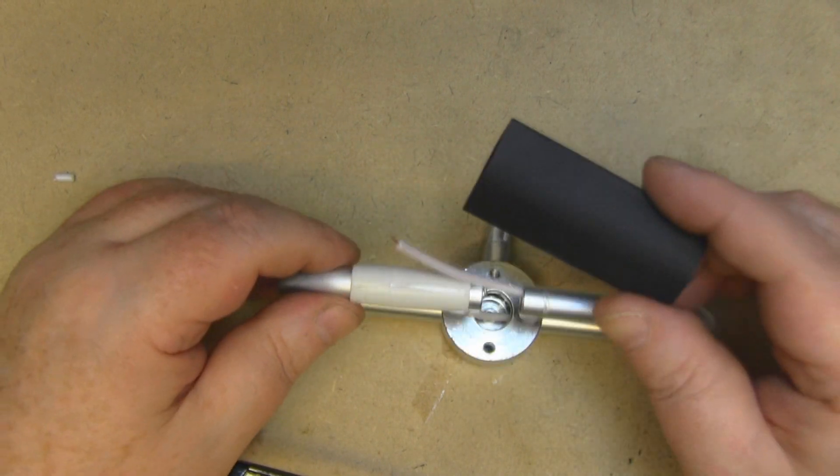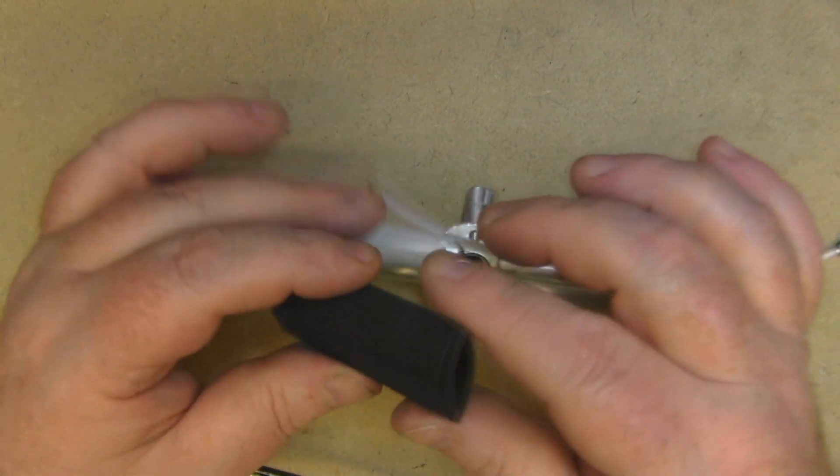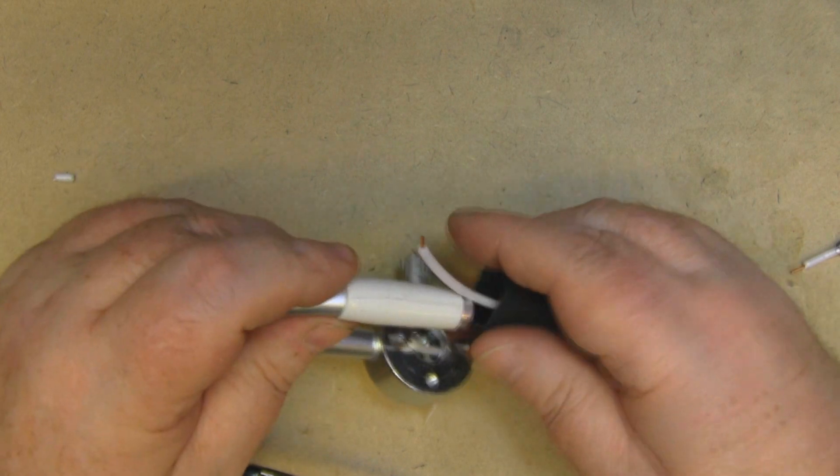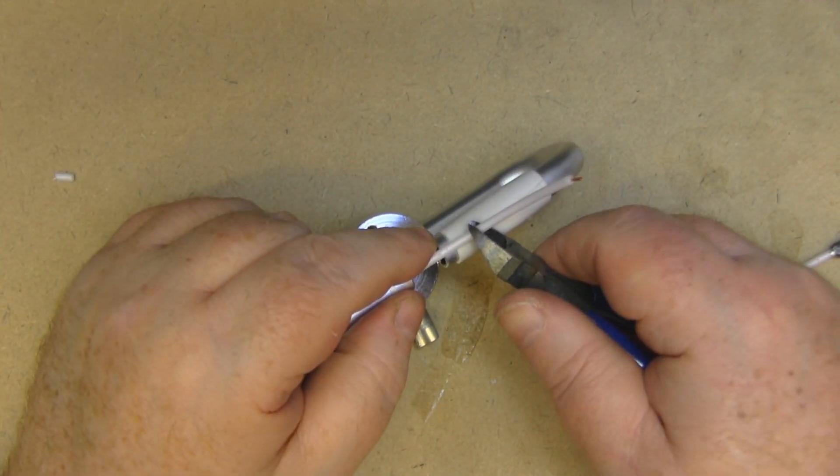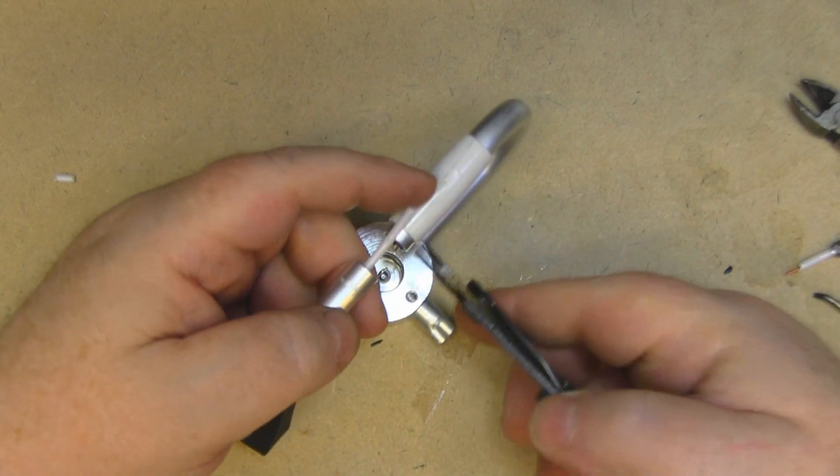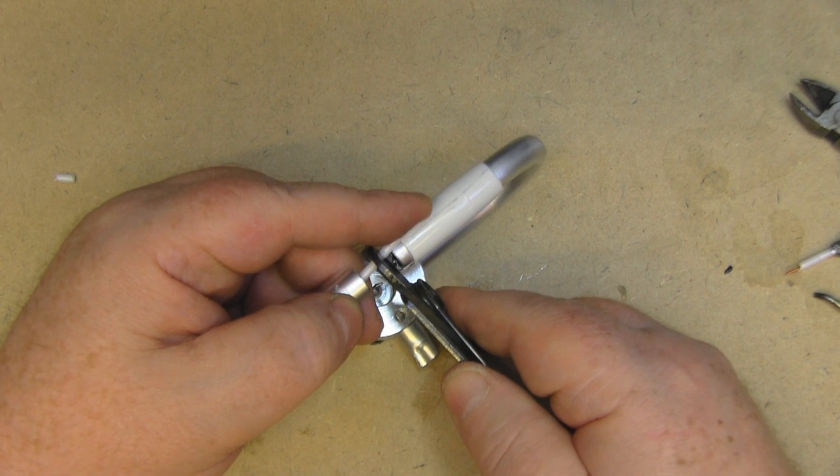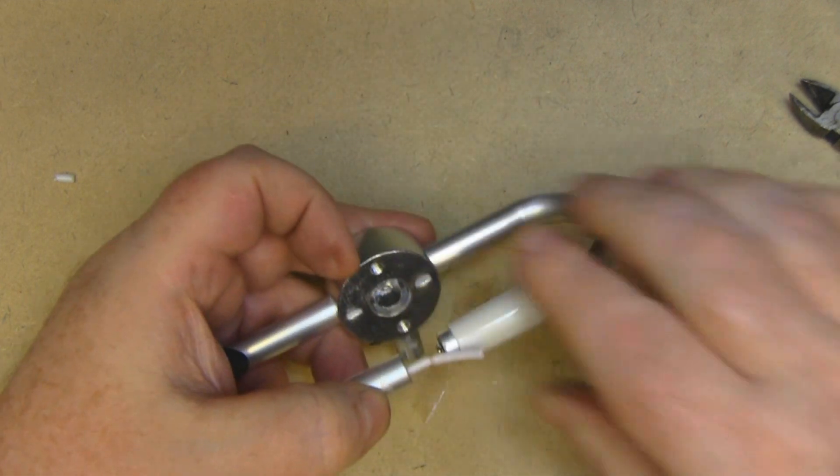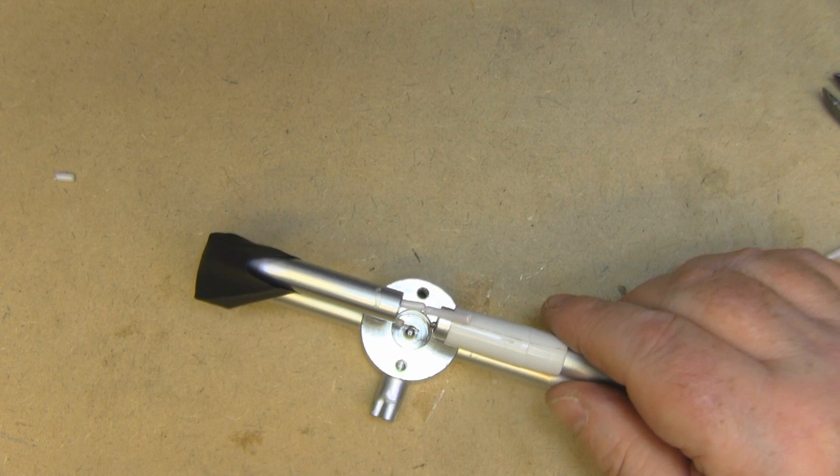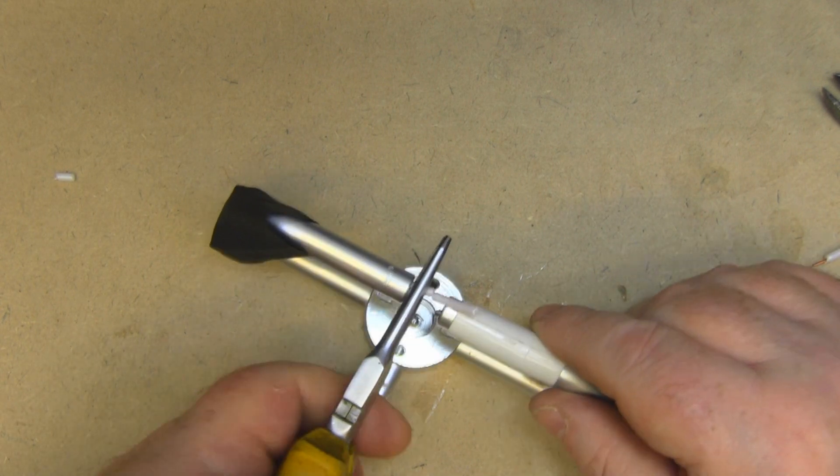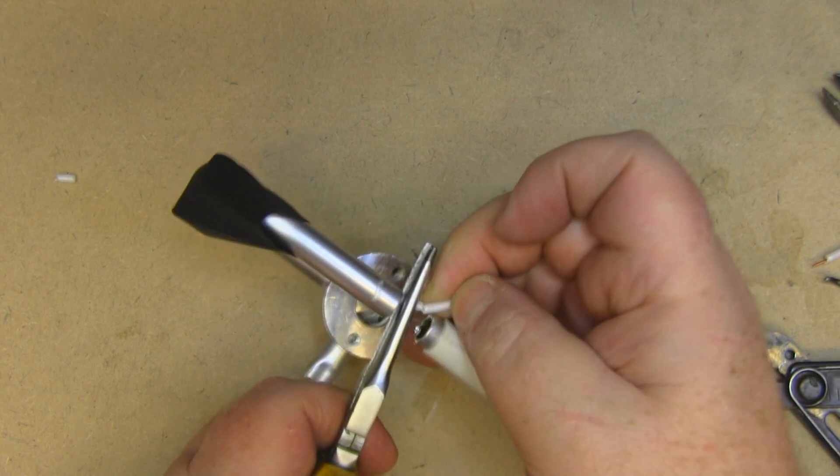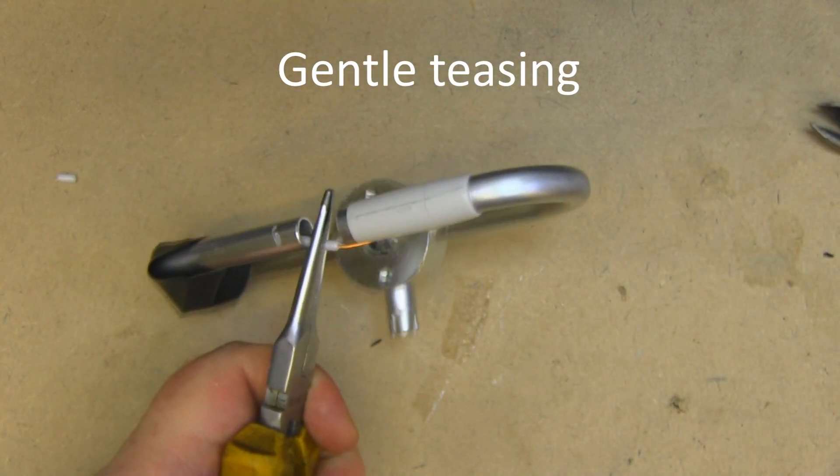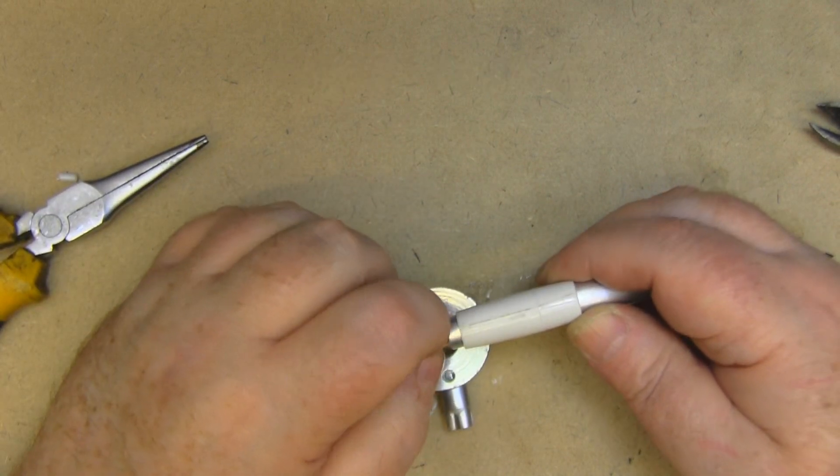Now before I go soldering this in place, I want to put some heat shrink tubing over. I'm not sure whether this is a little bit too big, but it's the only diameter I've got at the moment. So I don't pull it back through again, I'm just going to hold it with these needle nose pliers and gently tease it off the end.